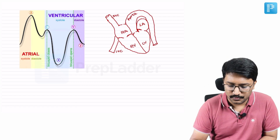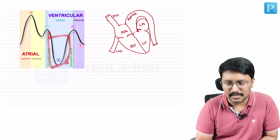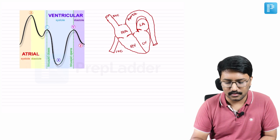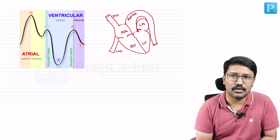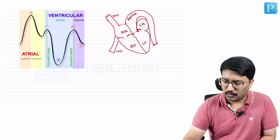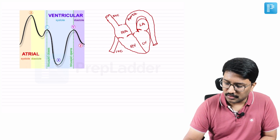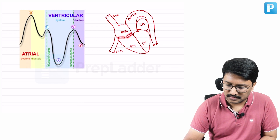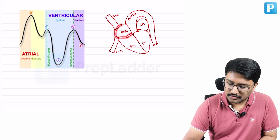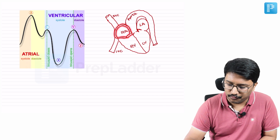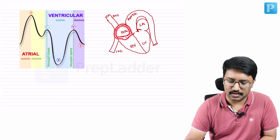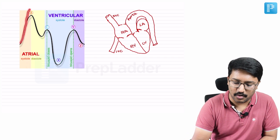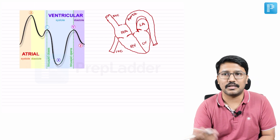Fused CV waves occur when the X descent is impaired or lost — particularly the X-dash descent. In tricuspid stenosis, the right atrium encounters much more resistance through the narrowed valve, so the A wave becomes much more prominent — a giant A wave is what we see in tricuspid stenosis.